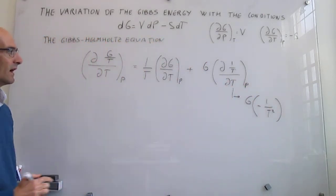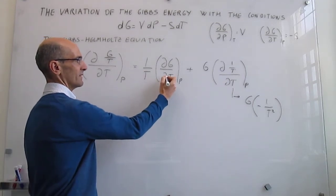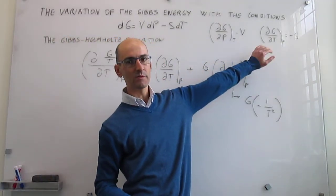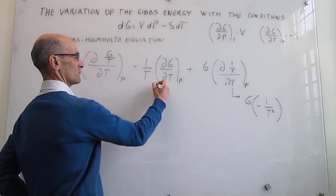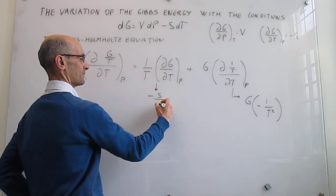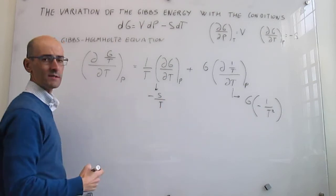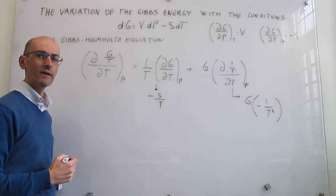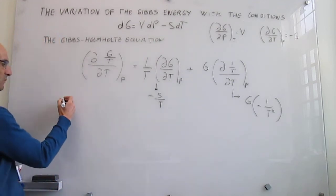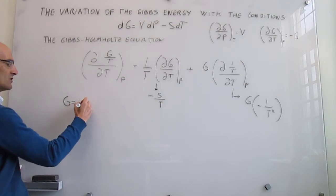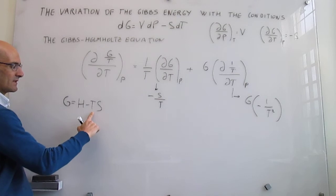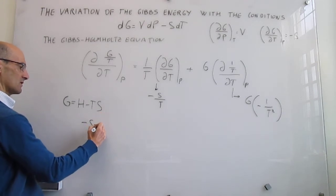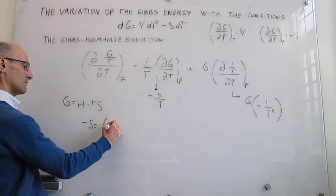That's just calculus. For the other term, we use our knowledge of the sensitivity of the Gibbs energy with temperature at constant pressure — that is the minus molar entropy. So we have minus entropy over T. Now we're going to recast this entropy term into something more useful by invoking the definition of the Gibbs energy as G = H − TS, and solving for minus entropy, which gives: minus S = (G − H) / T.